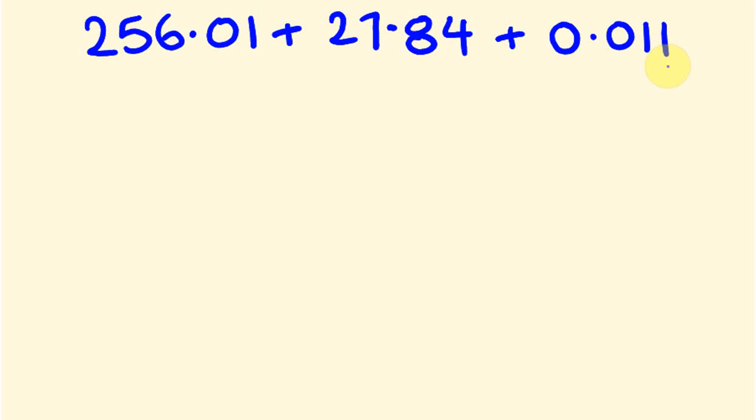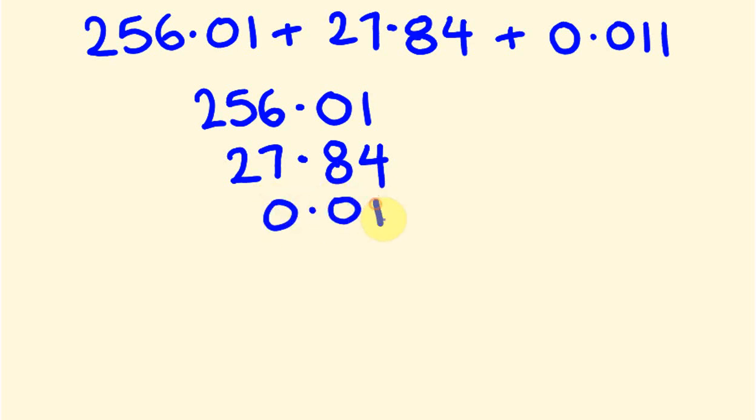First off again, we're going to write these so they occur in a nice straight line and everything lines up. So we'll start: 256.01. Now this 27 is going to line up—you know it will because the decimals line up here—0.84, and I also have 0.011.